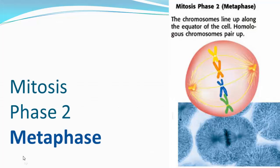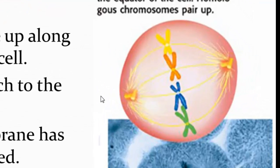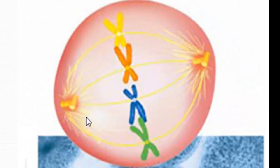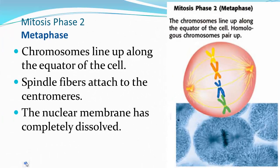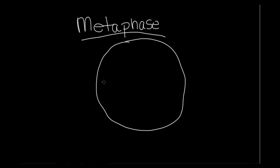The next phase of mitosis is metaphase. During metaphase, the chromosomes line up along the equator of the cell. The spindle fibers extend from the centrioles and attach to the centromere in the middle of each chromosome. The nuclear membrane has completely dissolved and is no longer visible.